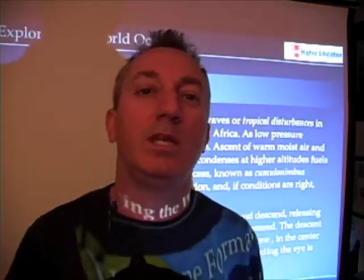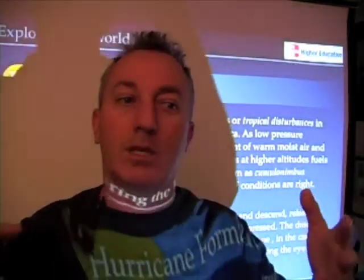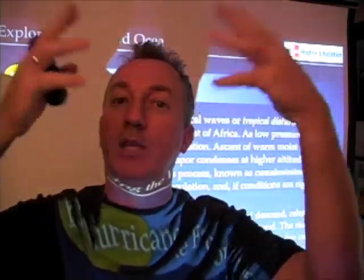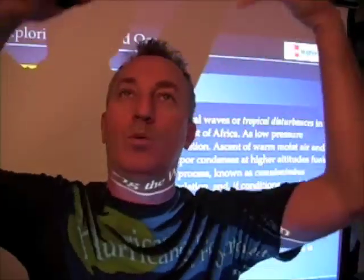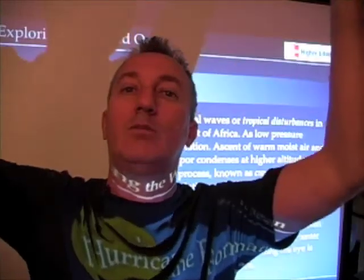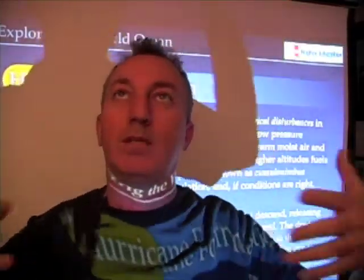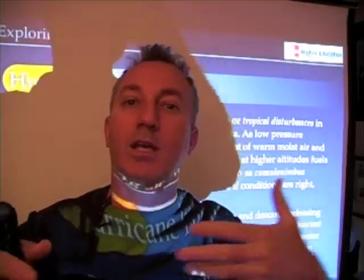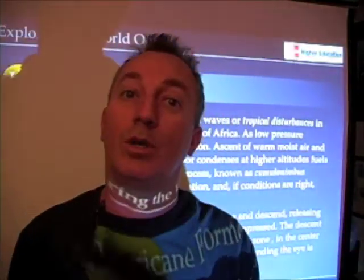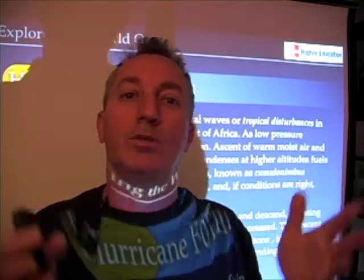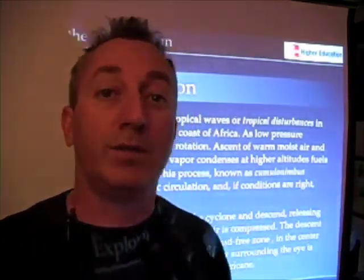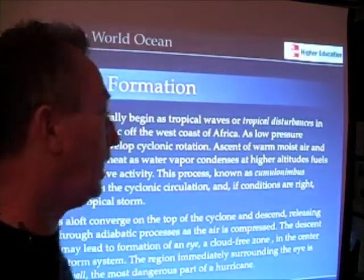Cumulonimbus convection occurs because water vapor rises, condenses, releases its latent heat, causing even more atmospheric heating and rising. Air rushes in to replace that rising air, and as it does, it begins to turn because of the Coriolis effect. A tropical disturbance can then turn into a hurricane. That's a rough and dirty recipe for how hurricanes form.